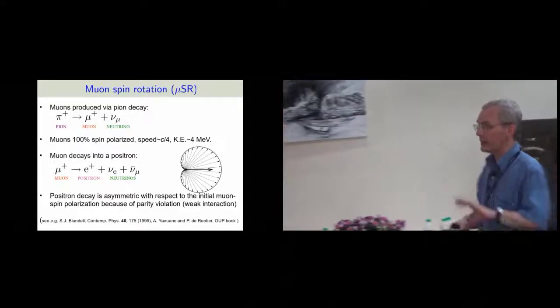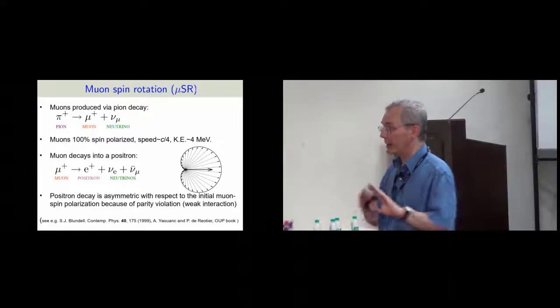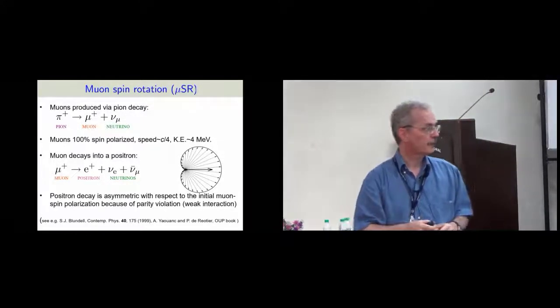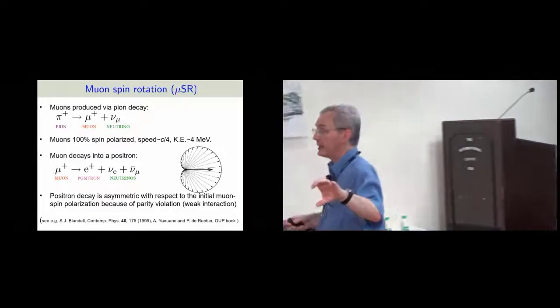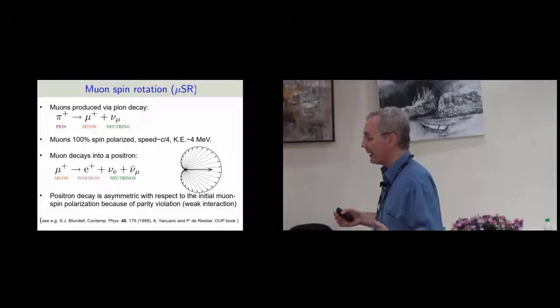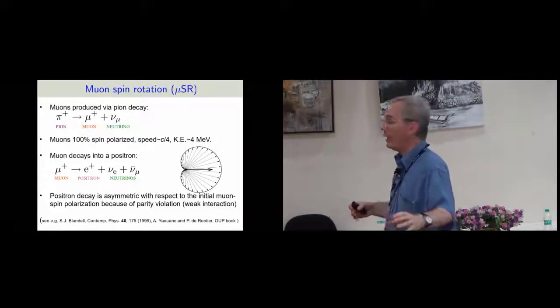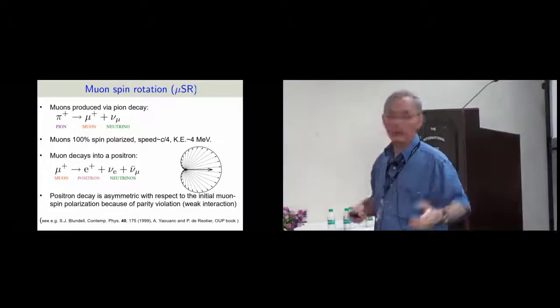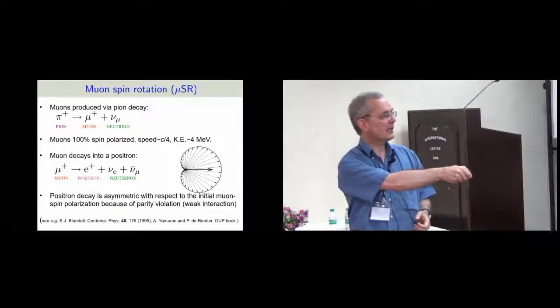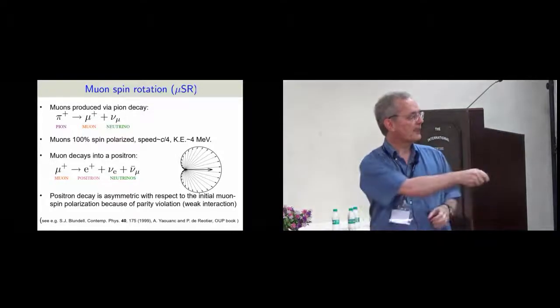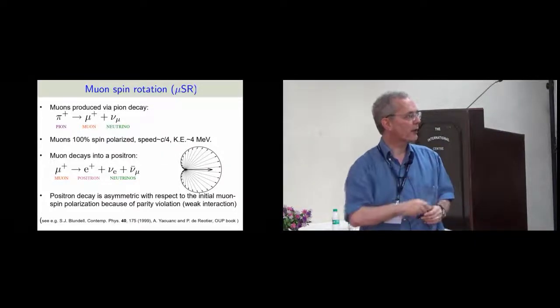Zahair in the next talk will tell us about how we can reduce that energy. But in this talk, we will always be dealing with 4 million electron volts. Then the muon sits in the sample, and it interacts with it. I'll tell you about that later. But then at the end of its life, maybe two microseconds later, longer or shorter, depending on the radioactive decay, it decays into a positron and a couple of neutrinos.